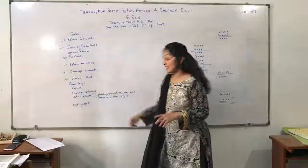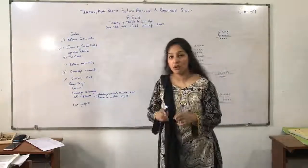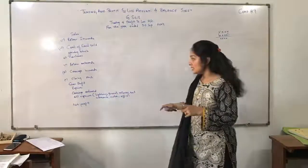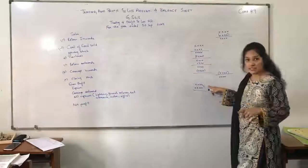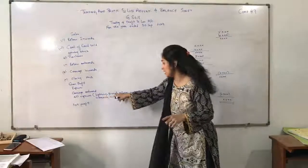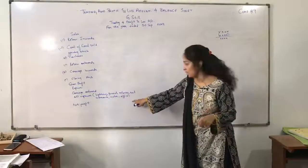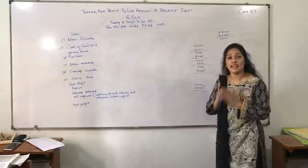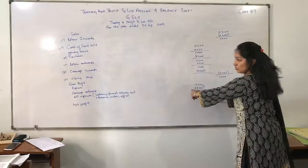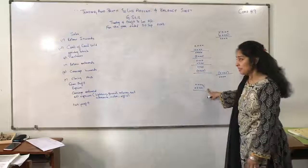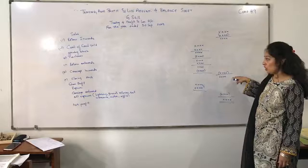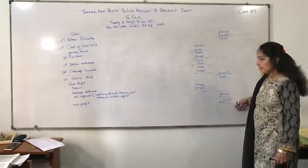Now, talking about the expenses: Carriage Outwards is your expense because here you are delivering the goods to the customers — that is your expense and it will be entered in the expenses account. All other expenses entered here include lighting, general, sundry rent, insurance, motor expenses, office expenses, or any other kind of expense. You will add Carriage Outwards and all expenses together, then subtract that total from the Gross Profit to get the Net Profit.